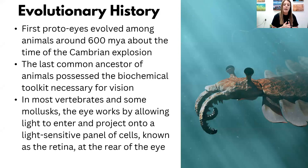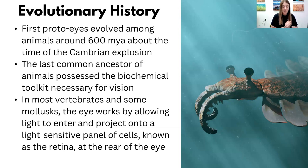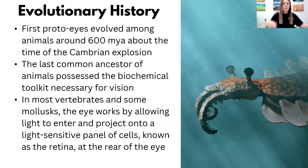In most vertebrate animals and some mollusks, the eye works by allowing light to enter and project onto a panel of cells known as the retina at the rear of the eye. This is a simple way to detect light, but they took it a step further. Early on it was just detecting light — is it dark or is it light? But it has moved past that and become a very complex system.